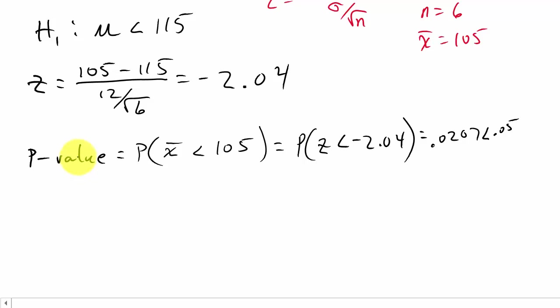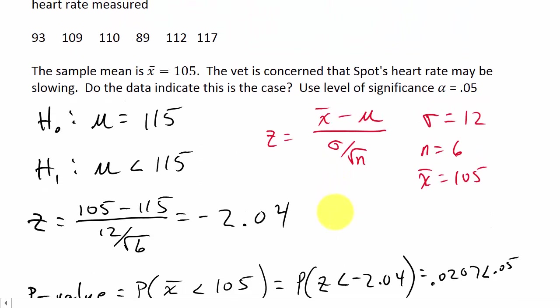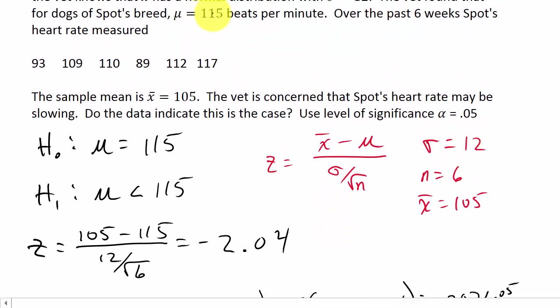Since our p-value is less than the significance level, we reject H naught. We reject the null hypothesis. What this is saying is that the heartbeat of the population could be less than 115 beats per minute.